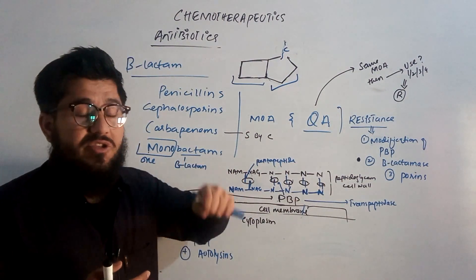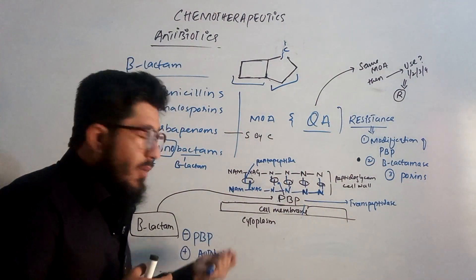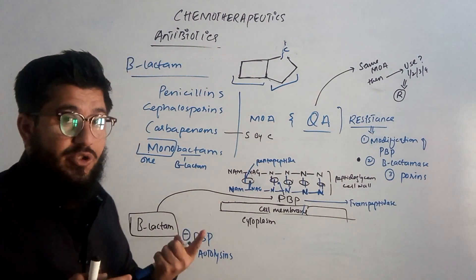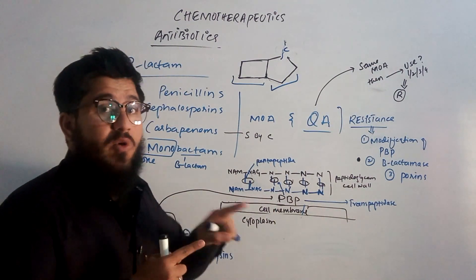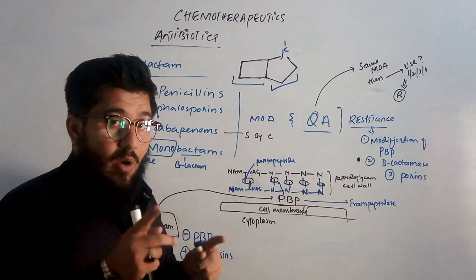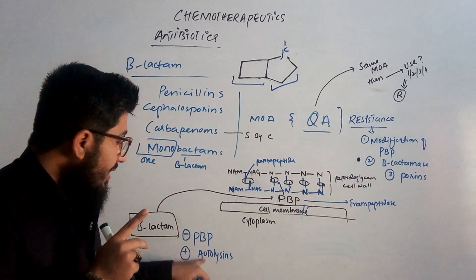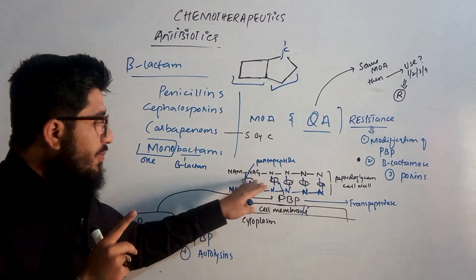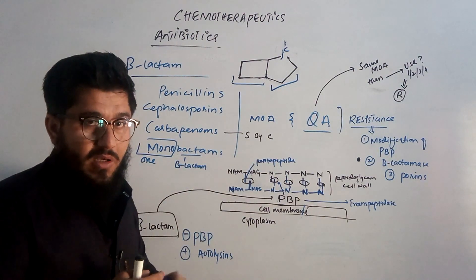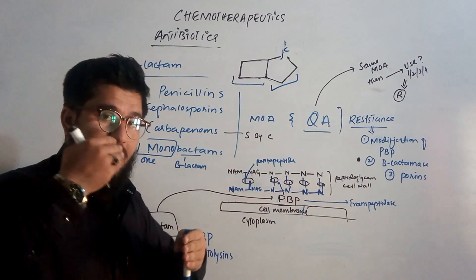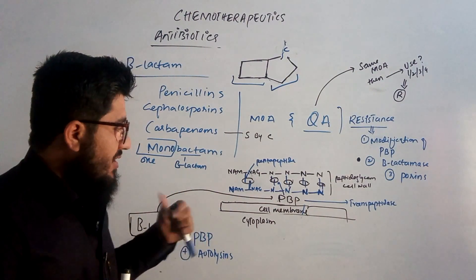Additionally, when beta-lactams inhibit the penicillin binding protein, autolysins are released. 'Auto' means self and 'lysis' means breaking — so these autolysins are responsible for further breaking down the cell wall. Two functions are seen: first, inhibition of PBP so no new synthesis occurs; second, release of autolysins causing breakdown of existing cell wall. No synthesis plus increased destruction means the cell wall becomes progressively weaker.